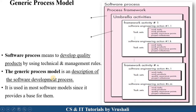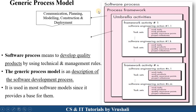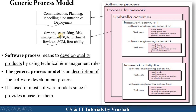The generic process model is a base of all other software models. In software engineering, there are models such as the waterfall model, spiral model, V model, and others, which we use for the development process. The generic process model is a description of all other software development processes. The process framework activities include communication, planning, modeling, construction, and deployment. Umbrella activities include software project tracking, risk management, software quality assurance, technical reviews, software configuration management, and reusability.